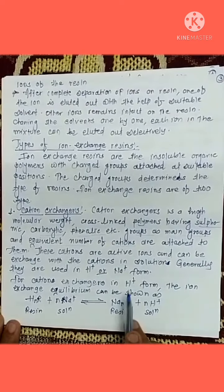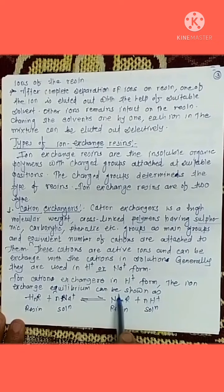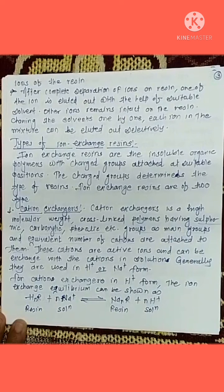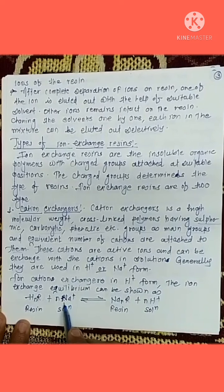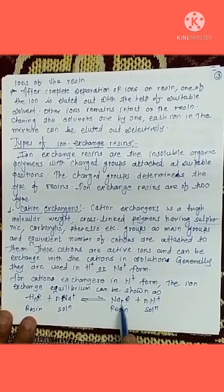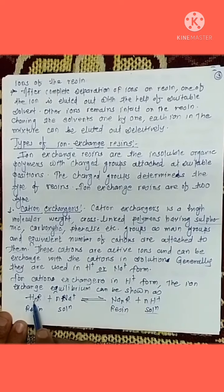For a cation exchanger in H+ form, the ion exchange equilibrium can be shown as follows. Here, HNR is your cation exchanger resin, and Na+ is the sodium ion present in the solution. When this solution comes in contact with your cation exchanger resin, hydrogen goes into the solution as H+ and sodium becomes attached to your resin. So we see that Na+ joins on the resin and H+ comes into the solution.